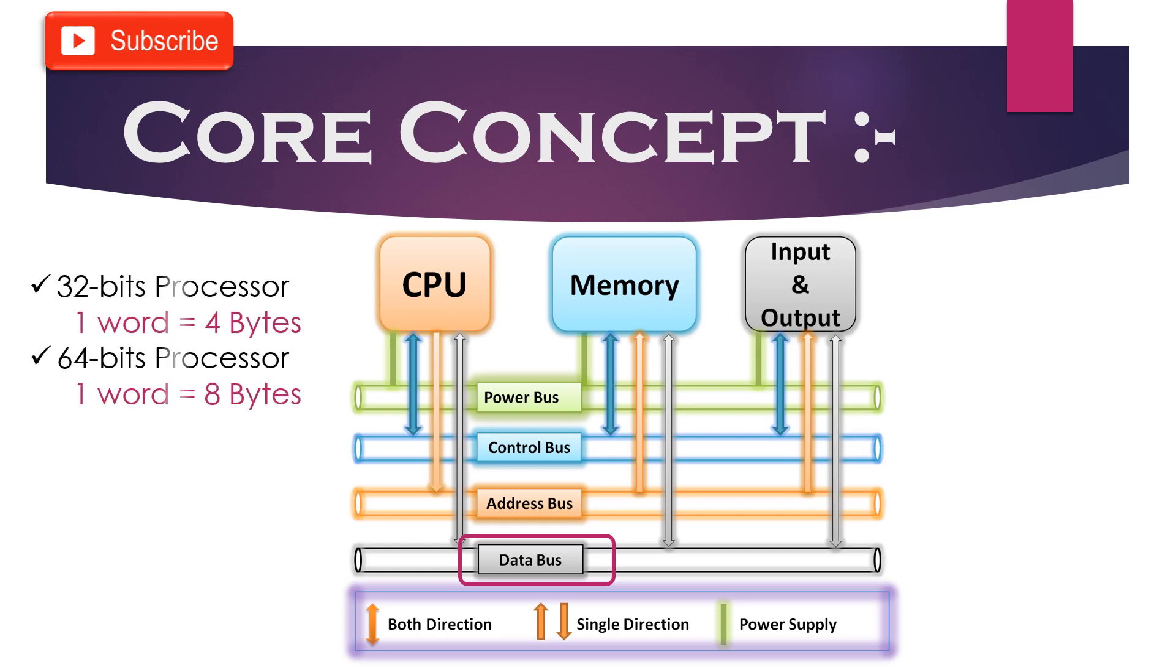And for a 64-bit processor, one word is equal to 8 bytes. In short, we can say that a 32-bit processor is capable of accessing 4 bytes at a time whereas a 64-bit processor is capable of accessing 8 bytes at a time.